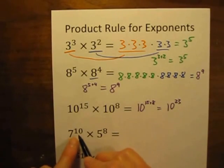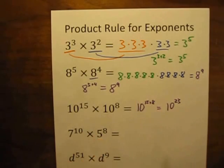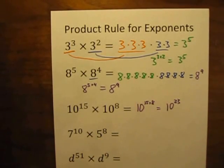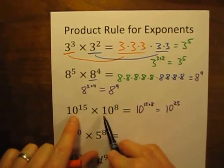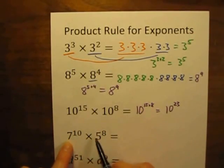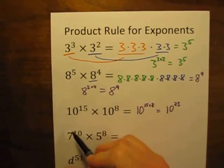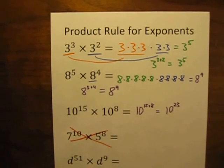How about this one: 7 to the 10th power times 5 to the 8th power. How can you handle this one? Do you just add the exponents? No — I said earlier the bases have to be the same. Here the bases are different. You cannot use the product rule on this problem when the bases are different.